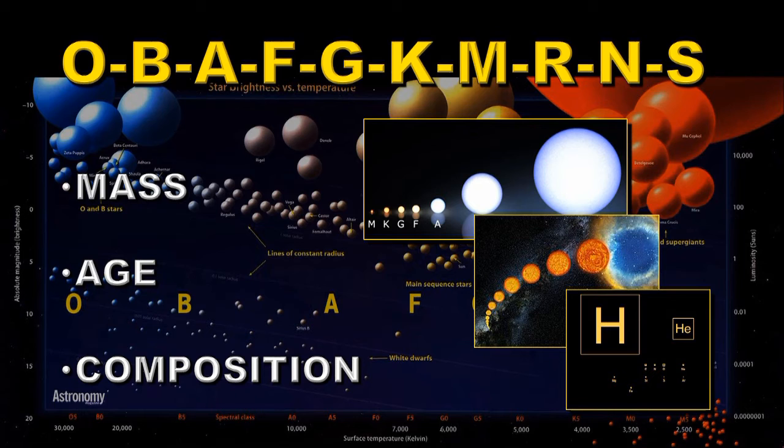Earlier in the universe, stars were mainly made of hydrogen and helium. They tended to be rather massive stars and short-lived and explode into supernovae. When those supernovae form, they form heavier elements.